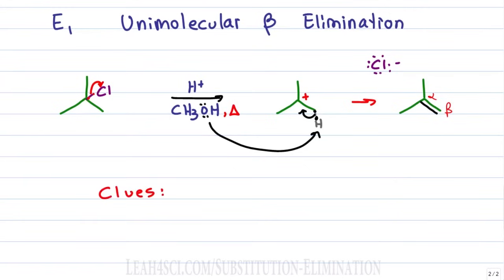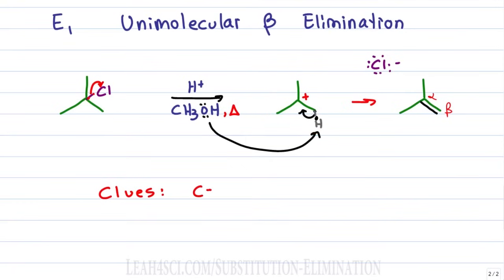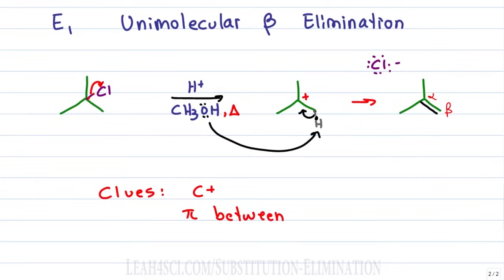The clues that an E1 reaction took place: one, you have a carbocation intermediate, and two, you have a pi bond between the alpha and beta carbon.